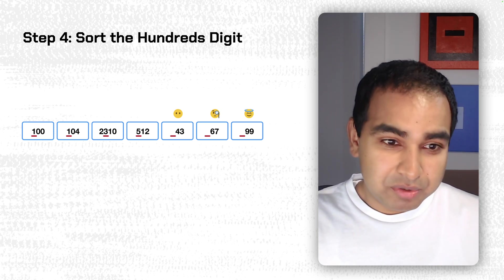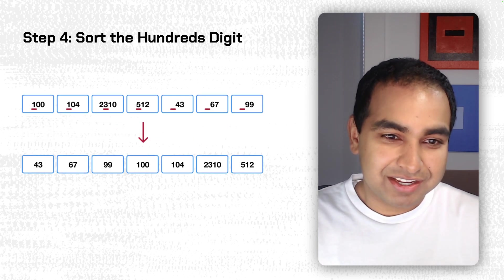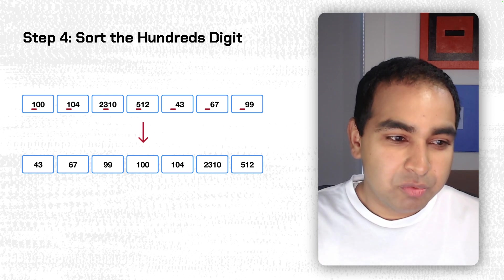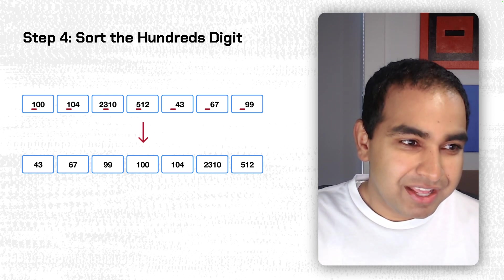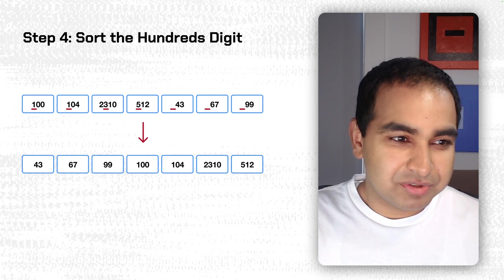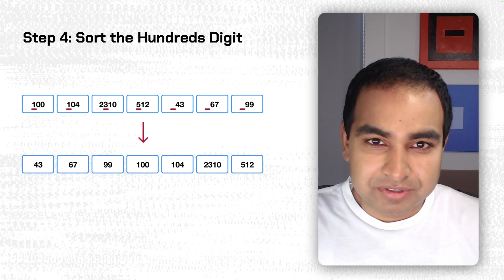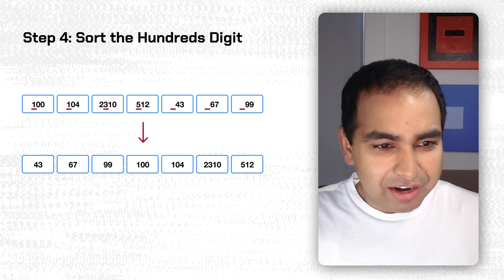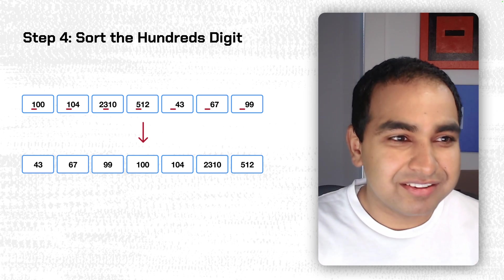And so when we sort with that particular mindset, you'll notice that the 43, 67, and 99, which are virtual zeros in there, they now become the first numbers that show up in our semi-sorted array. And then we sort again by the 100s digit, so the 1, 1, 3, 5 are now the values. And so you can start to see that our final sorted array is starting to get more evolved into what will be its final step.